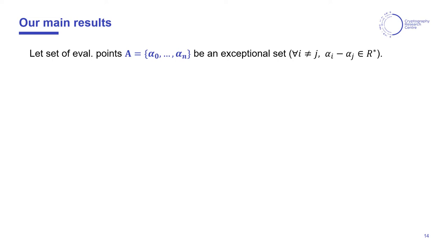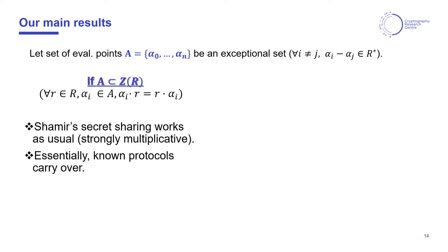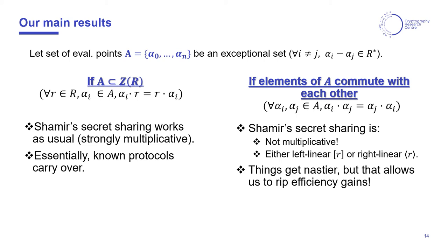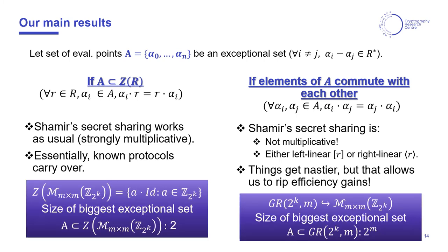So, once again, the most important aspect for Shamir secret sharing will be the properties of the set of evaluation points. We know from prior work that this set has to be exceptional. Over a non-commutative ring, we will additionally have two different cases. Either this set is contained in the center of the ring, in which case everything works essentially the same way as over finite fields, or if we relax the commutative requirements for these αs, so that they only need to commute with each other, we obtain secret sharing schemes which are not multiplicative, and which will be linear either on the left-hand side or the right-hand side, according to the choice of the evaluation map, as we show on the previous slide.